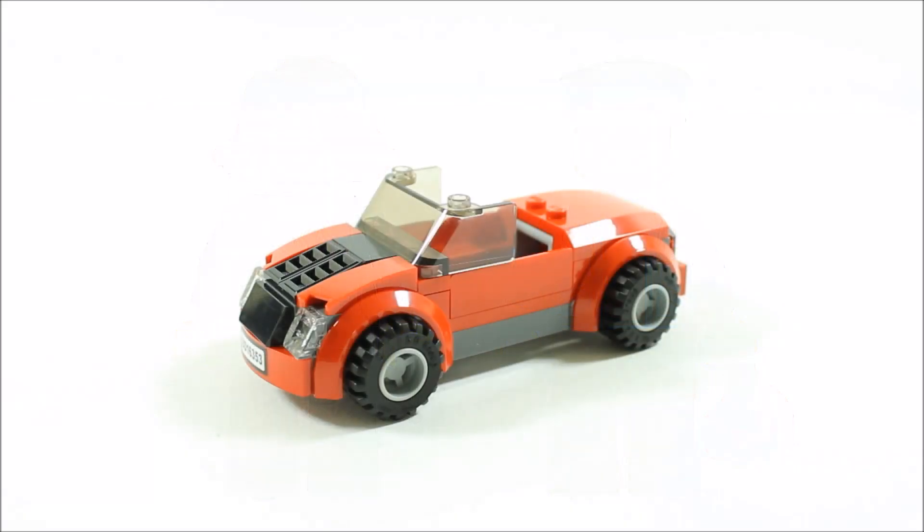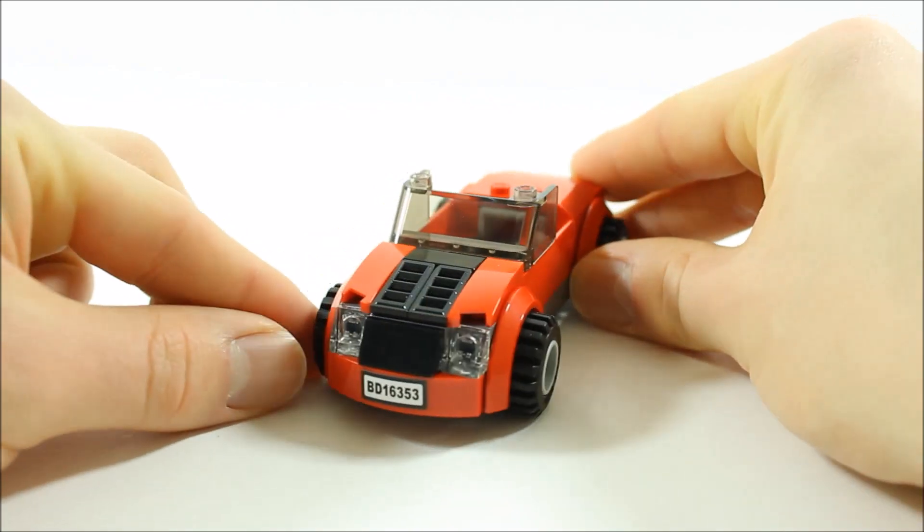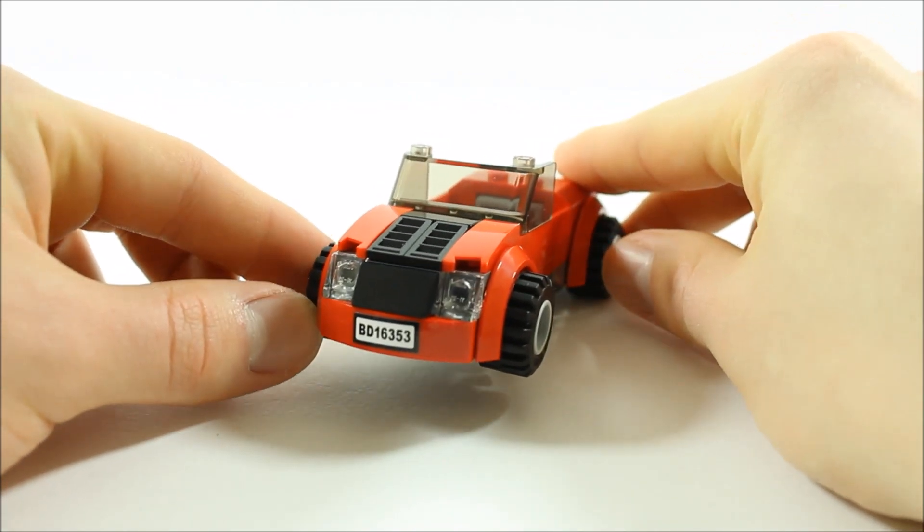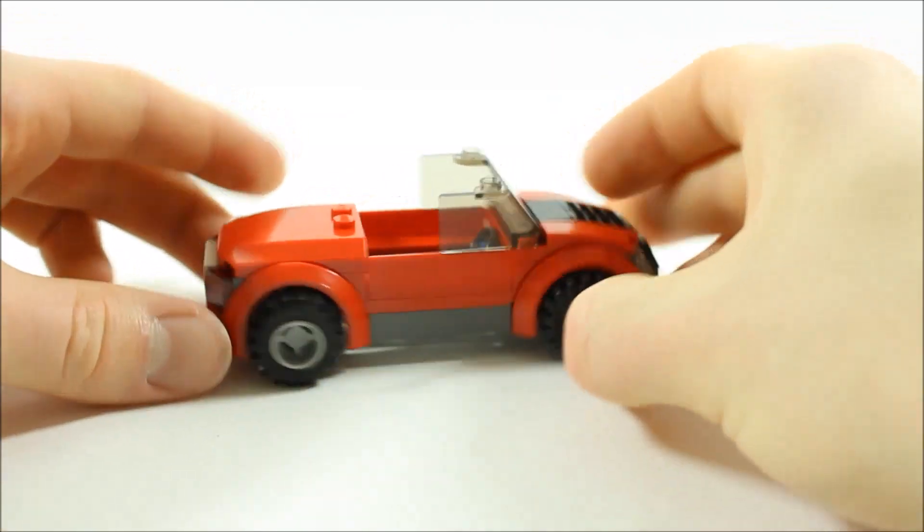The open-top red sports car is a simple build but it's still a nice addition to LEGO City. The wheels have mud guards. The front has a black grille with clear lights, a number plate sticker, and a standard windscreen.